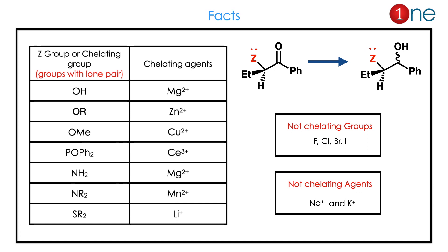The chelating group (Z) can be OEt, OMe, phosphine oxides, amines, or thiols. The chelating metals can be magnesium, zinc, copper, cerium, manganese, and lithium. An important fact: exclusions in the chelating group include fluorine, chlorine, and bromine/iodine. Similarly, chelating agents Na+ and K+ will not chelate — they form normal Cram's rule, not Anti-Cram's rule.